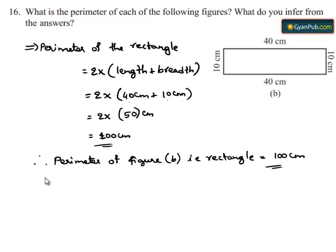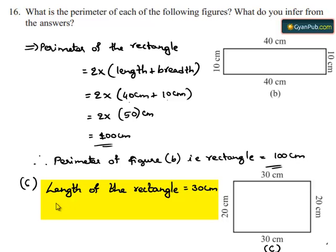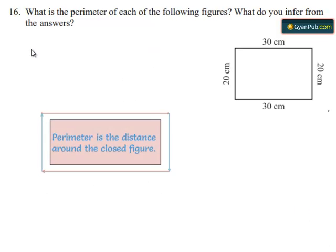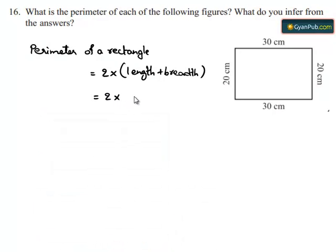Take down the next figure. Here is figure C. We can observe that it is a rectangle of length 30 cm and breadth 20 cm. We have to find the perimeter of the rectangle. We know that the perimeter of a rectangle is 2 times the sum of its length and breadth. This is equal to 2 times 30 plus 20, which gives 2 times 50. On multiplying 2 with 50, we get the perimeter of figure C as 100 cm.